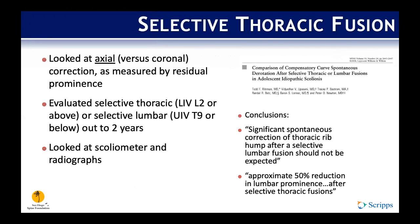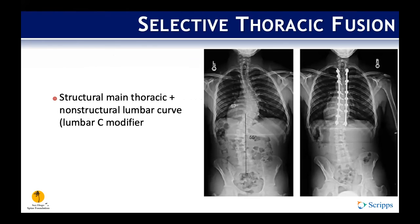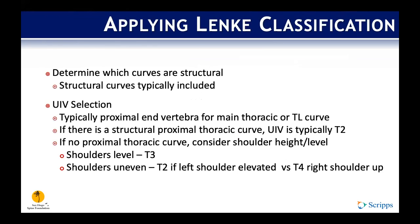Another study examined axial deformity correction — measured as residual rib prominence or lumbar prominence after fusion — determining whether selective fusion would also correct axial rotation. At two-year follow-up, selective lumbar fusion did not produce significant spontaneous axial correction, but selective thoracic fusion resulted in approximately a 50% reduction in lumbar prominence.